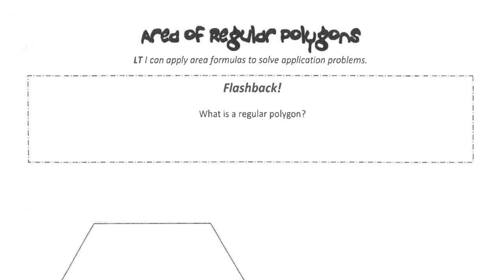So let's take a flashback here and talk about what is a regular polygon. A regular polygon is a polygon that is both equilateral and equiangular. Remember, equilateral means all the sides are congruent and equiangular means all the angles are congruent.